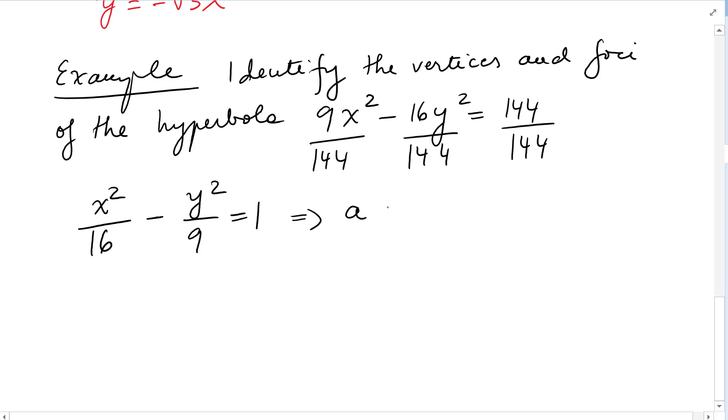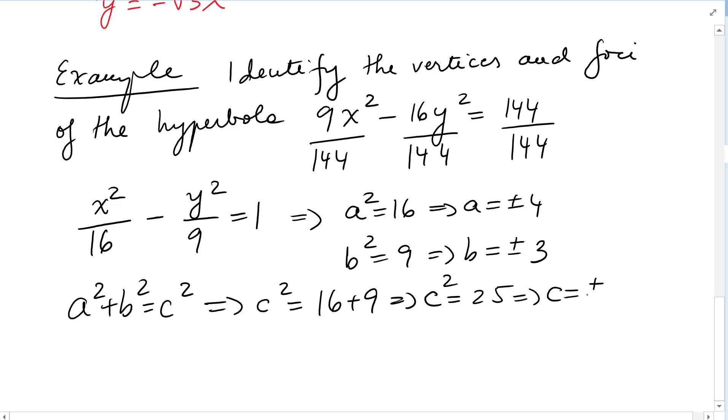So this tells us that a² = 16, so a = ±4, and b² = 9, so b = ±3. And we know that a² + b² = c², so c² = 16 + 9, c² = 25, so c = ±5.